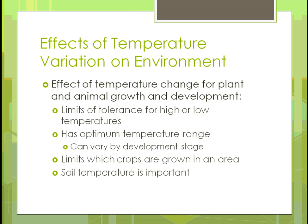For the effect of temperature on plant and animal growth and development, it can affect both. There are limits of tolerance for high and low temperatures — plants will only grow and animals will only live within certain temperature ranges, so they have their optimum range. It can also vary based on the development stage of the plant.